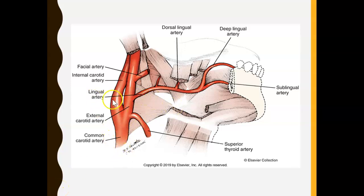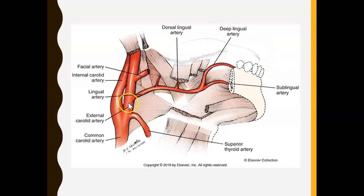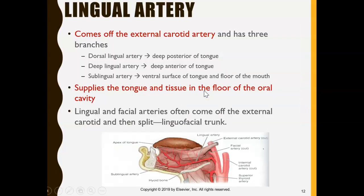One of the arteries we're going to look at is the lingual artery. We have the common carotid artery coming out of our aorta, pumping blood away from the heart into the head and neck area. It's the external carotid artery that we're most interested in because this is the one that supplies blood to the mouth, teeth, and tongue. One of those branches is the lingual artery.